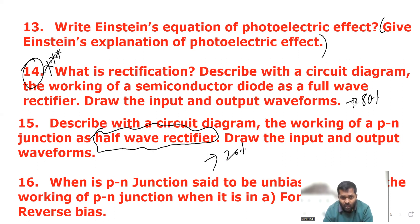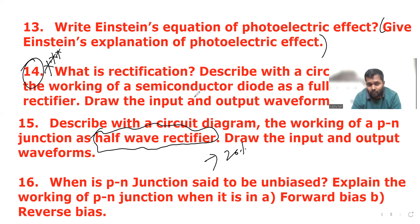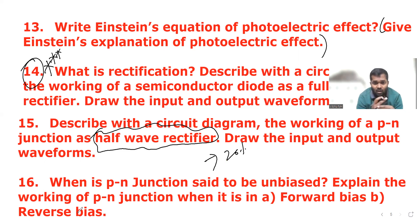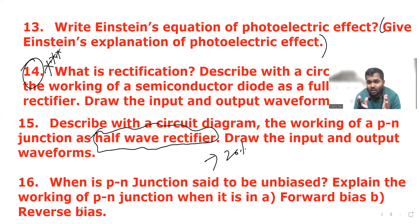If neither the fourteenth nor fifteenth question appears, there will definitely be another question: when is a PN junction said to be unbiased? Explain the working of a PN junction when it is in forward bias and reverse bias. This sixteenth question covers forward bias and reverse bias topics. So these are a total of 16 important five-mark questions we can definitely expect in the exam.